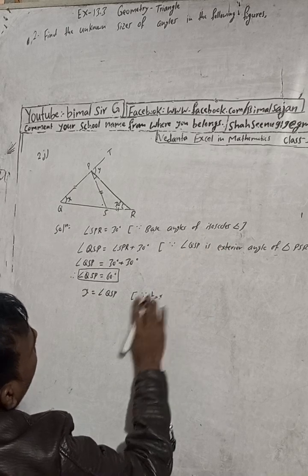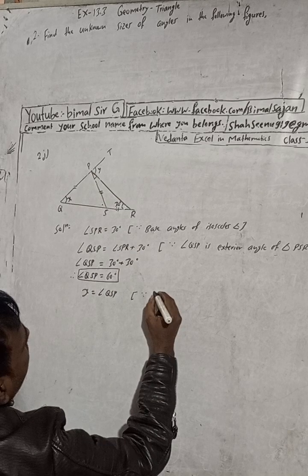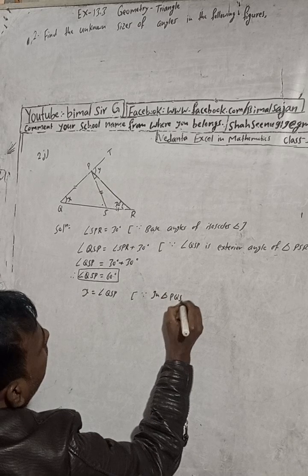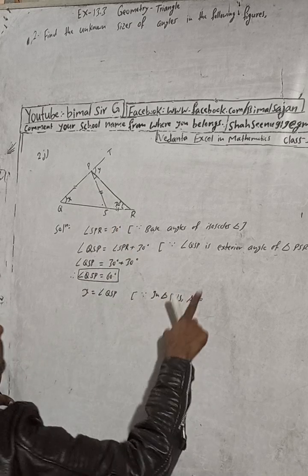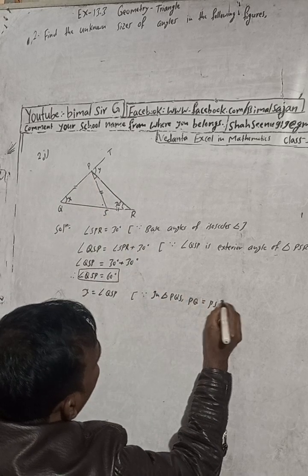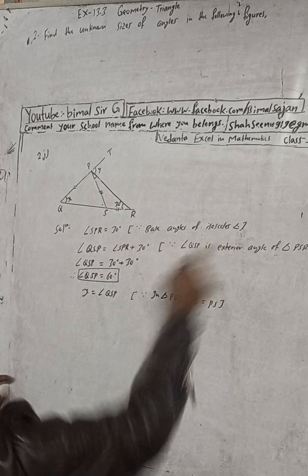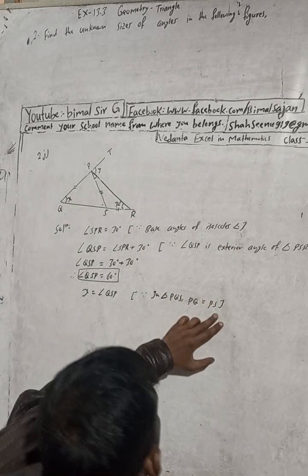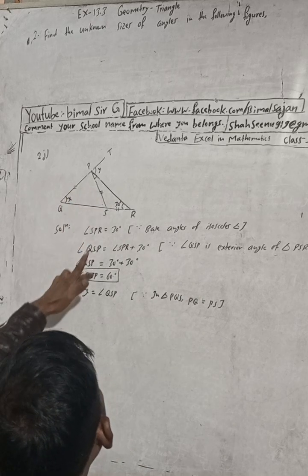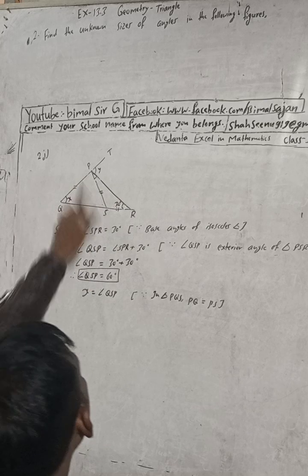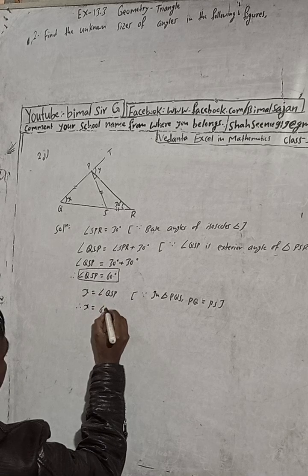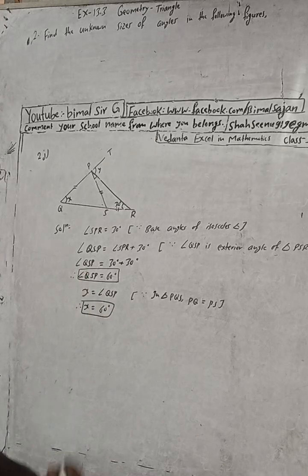In triangle PQS, PQ is equal to PS. Since PQ equals PS, this gives us an isosceles triangle, and in an isosceles triangle the base angles are equal. So this angle equals angle QSP, which is 60 degrees. Therefore, X is equal to 60 degrees. We have found the value of X as 60 degrees.